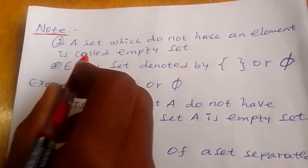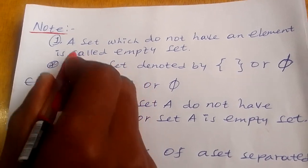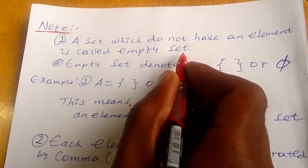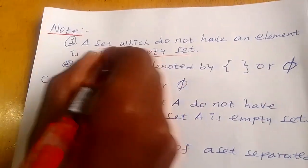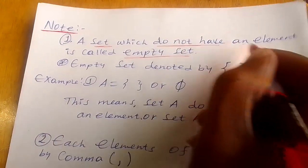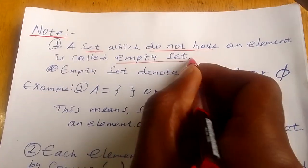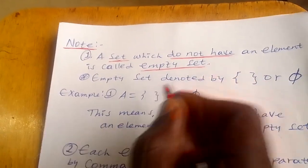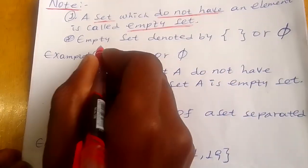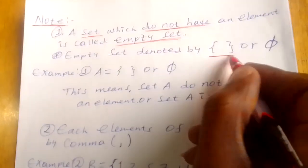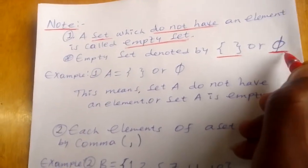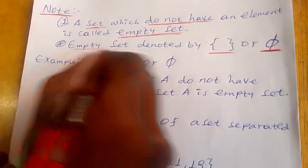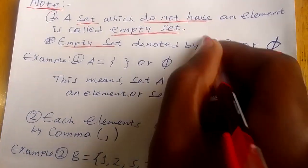Note 1: You should understand the following. Don't forget — a set which does not have an element is called an empty set. Don't forget: an empty set is denoted by this symbol, or by the Greek letter phi. The Greek letter phi represents the empty set, or we can use this symbol.